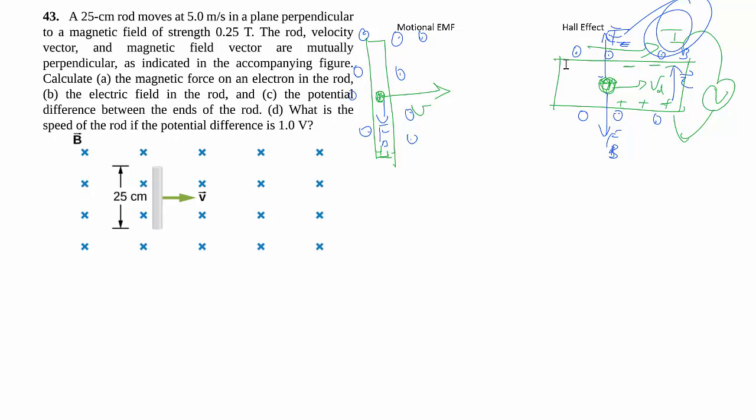Again, you're going to collect some positive charges on one end and negative charges on the other end until you create an electric field which creates an electric force that cancels out the magnetic force. So you can actually measure the voltage difference between the two ends, and that's what we call the motional EMF.